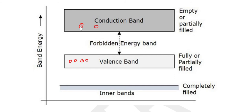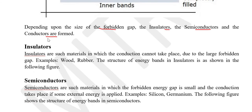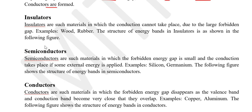The gap between the valence band and conduction band is the forbidden energy gap. Depending upon the size of the forbidden gap, insulators, semiconductors, and conductors are formed. So from the energy band gap, we have three types of materials: insulator, semiconductor, and conductor.